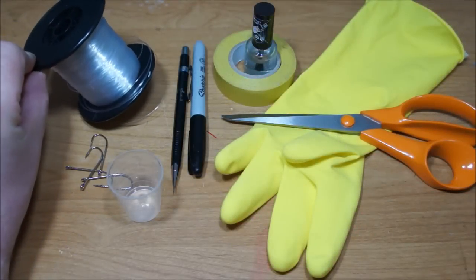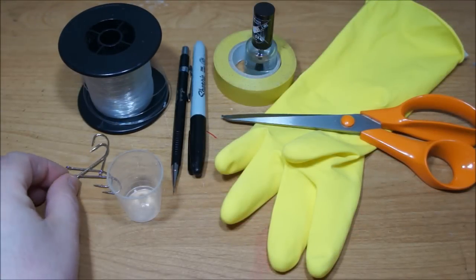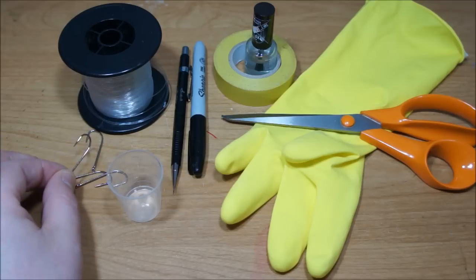For fishing line I'm just using standard 35 pound monofilament. I've got four hooks here, these are O'Shaughnessy 2-0 sized nickel plated.